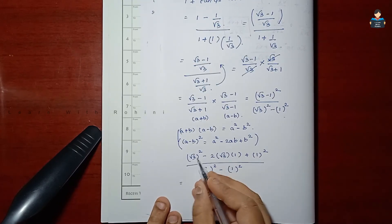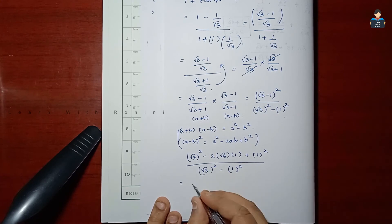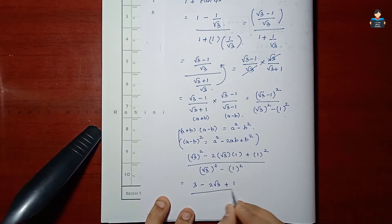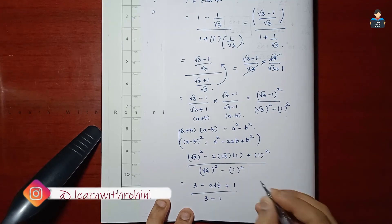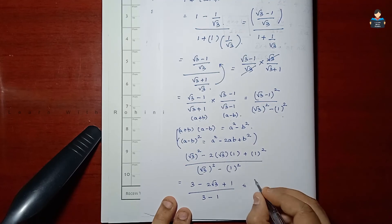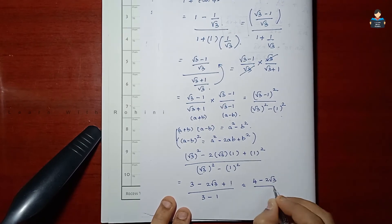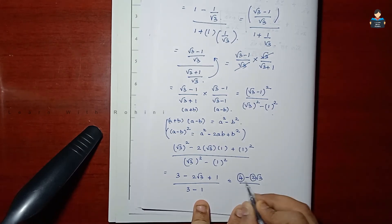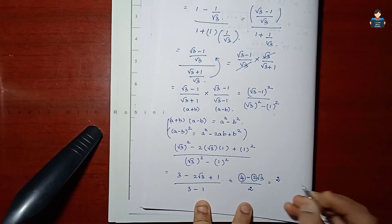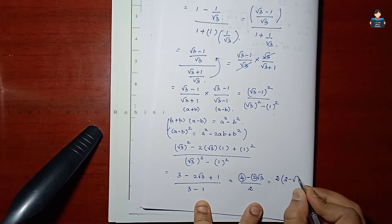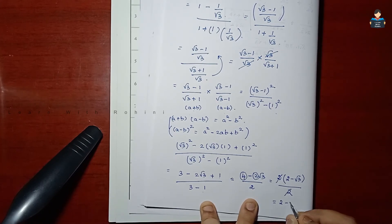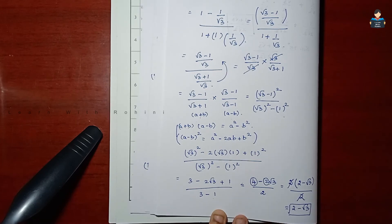Substituting: root 3 squared is 3, so the numerator is 3 minus 2 root 3 plus 1, which equals 4 minus 2 root 3. The denominator is 3 minus 1 equals 2. So we get 4 minus 2 root 3 by 2. Taking 2 as common factor, this becomes 2 minus root 3 by 1, so the answer is 2 minus root 3. This video is done. If you like, share, subscribe. Thank you.